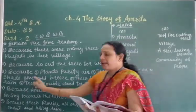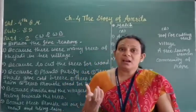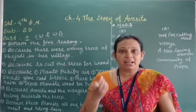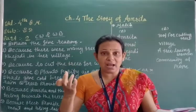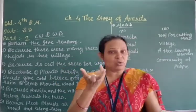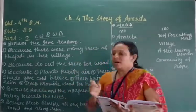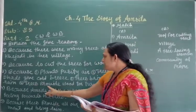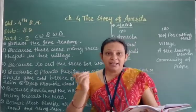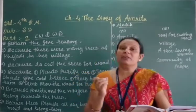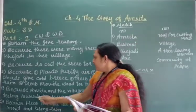Third number: trees bring rain. When there is no rain, how can vegetation grow? And if vegetation cannot grow, what do we eat? If we don't have water, we have nothing to eat. So trees are very useful. Fourth number: trees provide wood for furniture. In our houses we make furniture, tables, chairs — all made with wood, and wood is provided by trees.